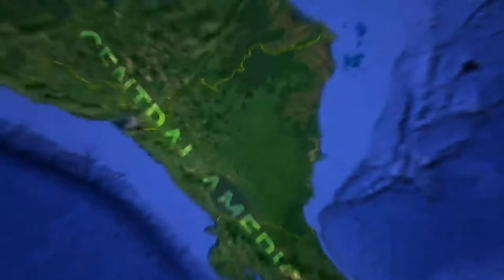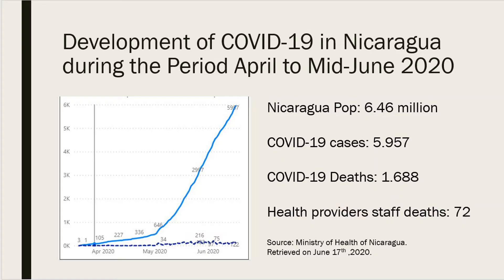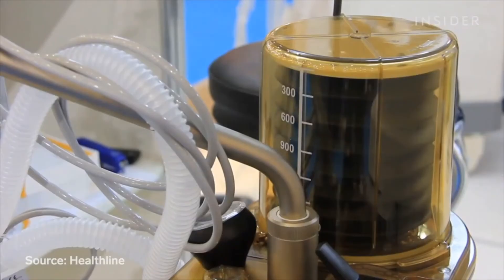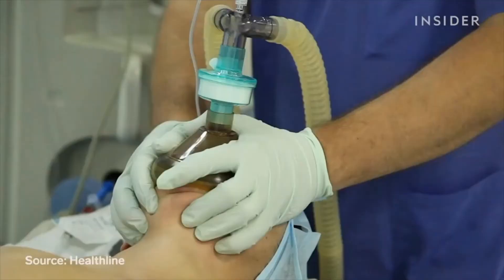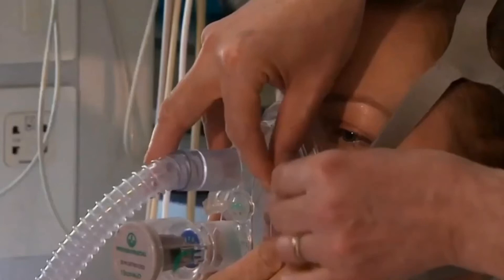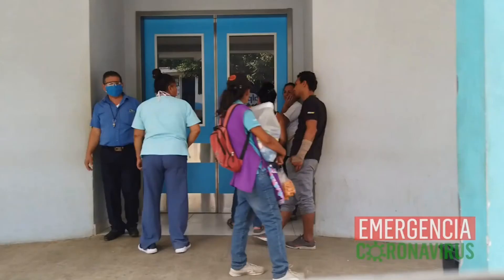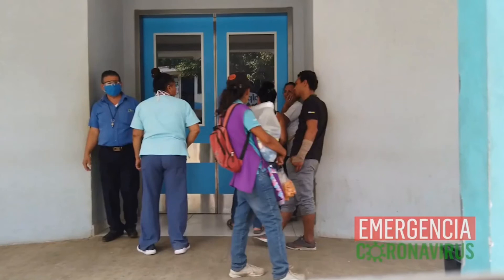Nicaragua is a country located in Latin America where the expansion of COVID-19 is increasing every week. On mid-June 2020, there were almost 6,000 cases of COVID-19 and almost 1,700 deaths, of which 72 were healthcare provider staff. The emergency care services at hospitals had already reached full capacity. Despite being in delicate physical conditions, patients were asked to seek care at a different hospital because there wasn't any room available.